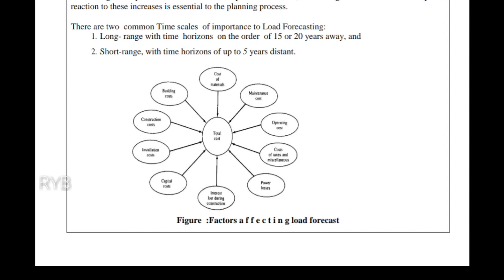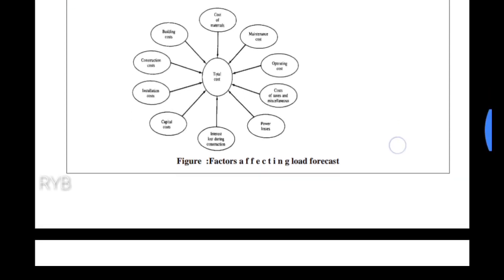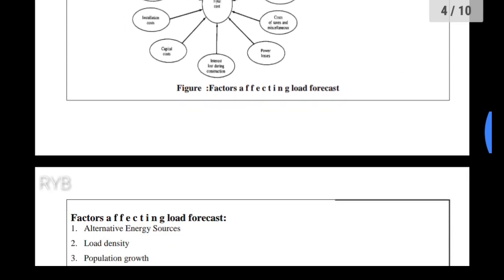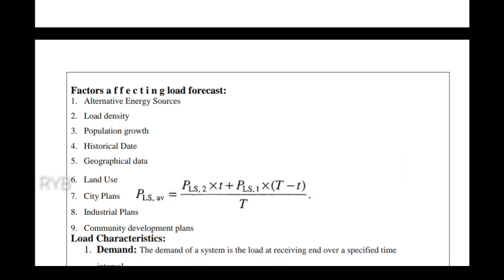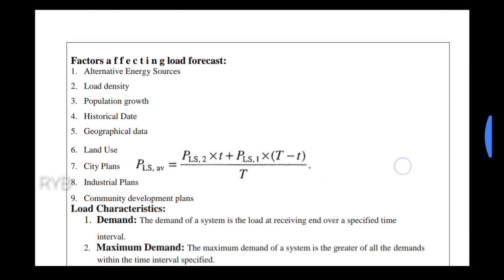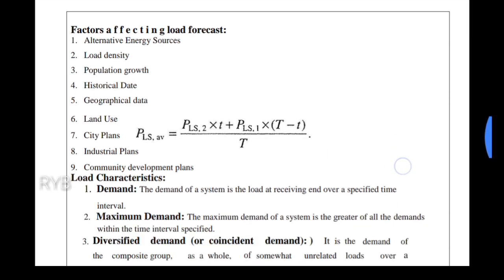The factors affecting load forecasting include: cost of material, operating cost, power losses, capital losses, land and building costs. Additional factors include: alternative energy sources, load density, population growth, historical data, geographical data, land use, city plans, and industrial plans.